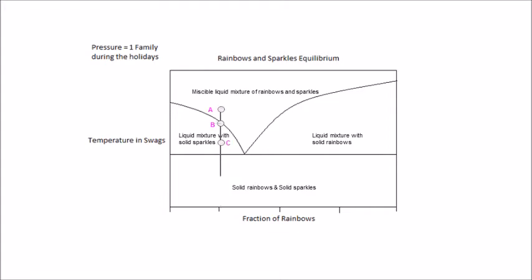Once we cross this curved line, we are still in the two-phase equilibrium region composed of solid sparkles and a liquid mixture of sparkles and rainbows. We determine the composition of these two phases like previously. We draw the tie-line that crosses point C. The composition of the solid phase remains pure sparkles.